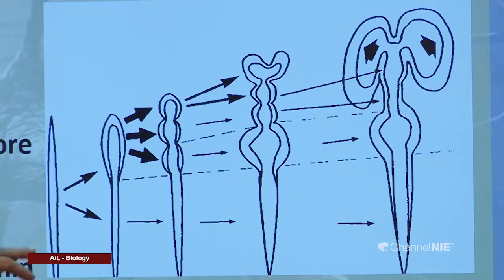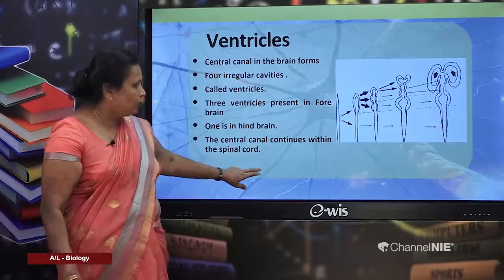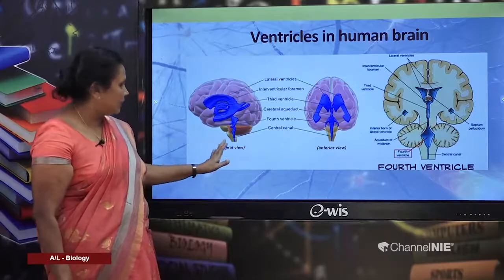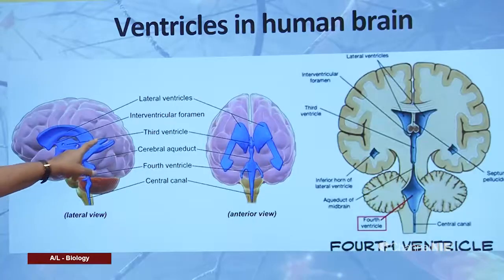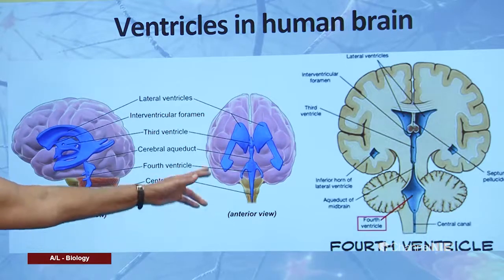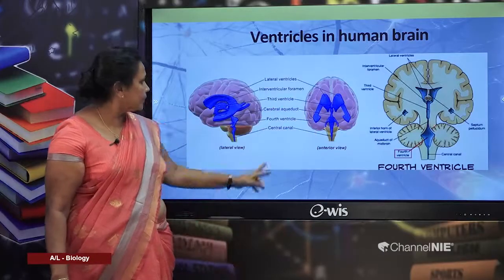The neural cord's anterior part enlarges and differentiates into three regions: forebrain, midbrain, and hindbrain, with an internal cavity. Looking at the ventricles in the human brain from different angles: in lateral view the blue-colored regions show ventricles; in anterior view two lateral ventricles are visible. The third ventricle and fourth ventricle are also shown, and all are connected together.